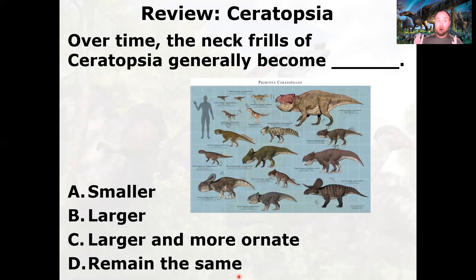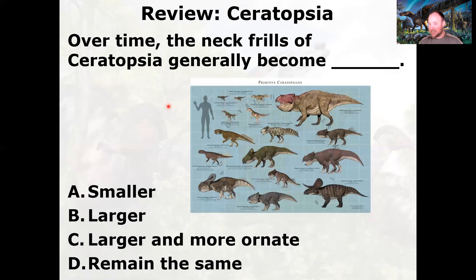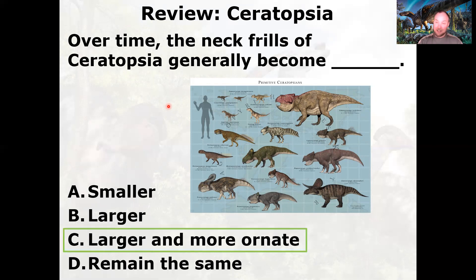Let's review what we talked about last time. Over time, the neck frills on the back of the skulls of the Ceratopsians generally become what? Here are some primitive Ceratopsians, some of the more basal earlier forms. Think about the later, more derived forms like Triceratops or Styracosaurus. Their neck frills are larger and, in the case of Styracosaurus, much more ornate, spiky, and adorned. The purpose of the neck frill is not necessarily defense, but possibly display, thermal regulation, or jostling with each other.